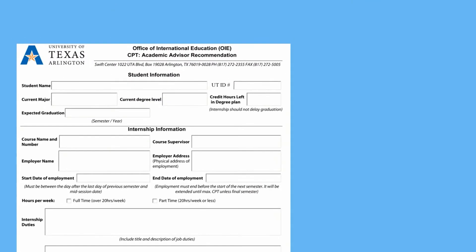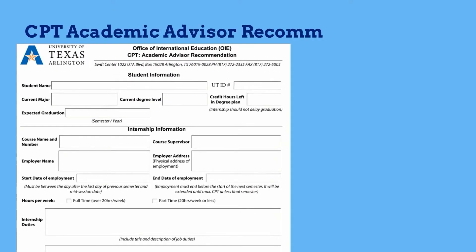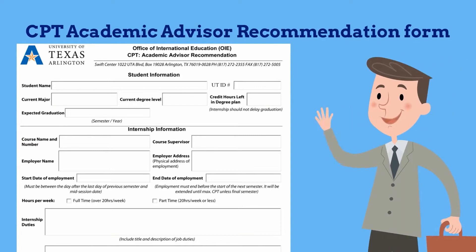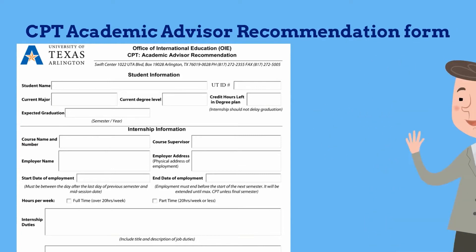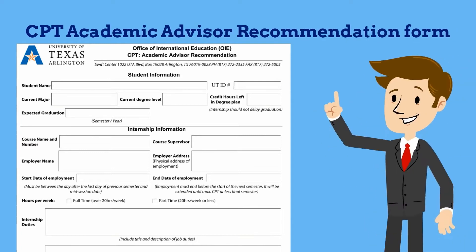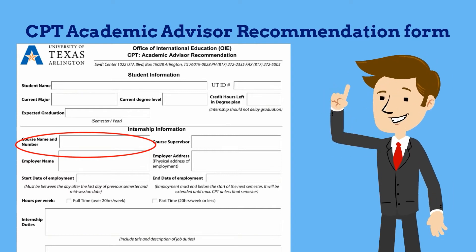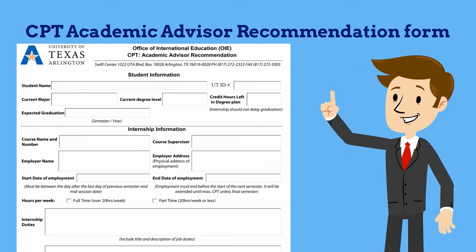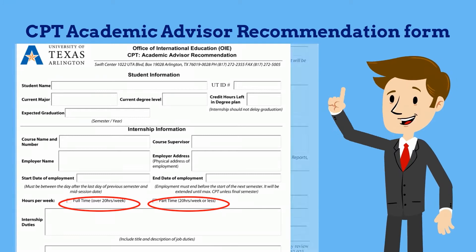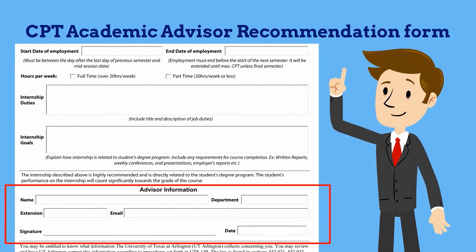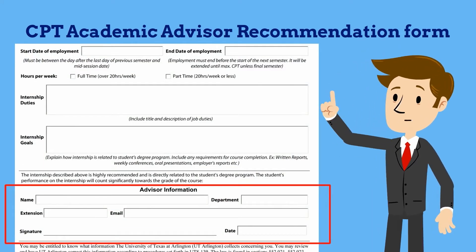The first form is the CPT academic advisor recommendation form. This form is for your academic advisor to complete. We will use this to determine which course you're taking to get credit for the internship, whether you're applying for part-time or full-time CPT, and to verify that your academic department recommends the internship you have accepted.